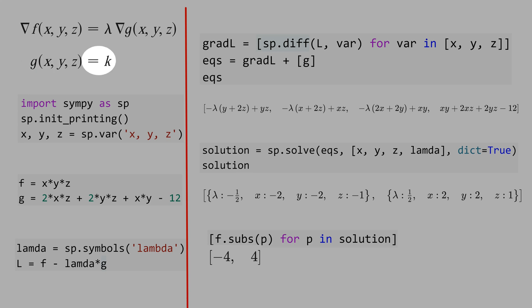And g is a constraint for our optimization problem. This k here is a number that in this case is 12. That means you want to pick up x, y, and z that makes g equal 12.